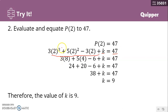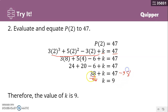We evaluate P of 2 and equate it to 47. Substituting 2 into the polynomial: 3 times 2 cubed plus 5 times 2 squared minus 3 times 2 plus k. Solving step by step — 3 times 8 plus 5 times 4 minus 6 — gives 38 plus k. Setting this equal to 47 and applying the addition property of equality: 47 minus 38 equals 9. Therefore the value of k is 9.